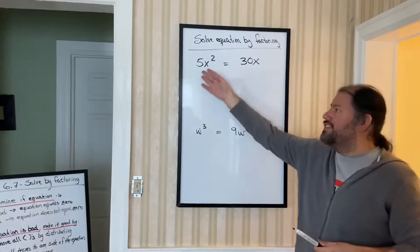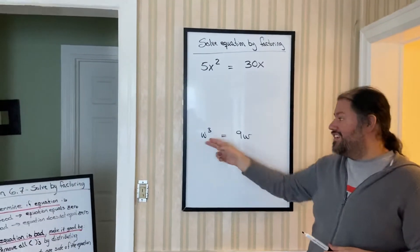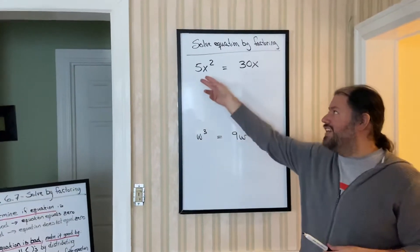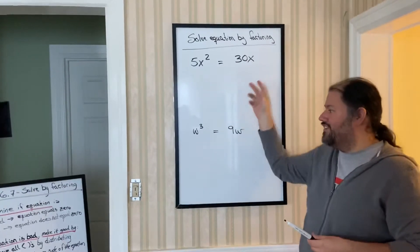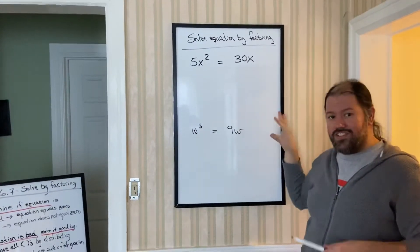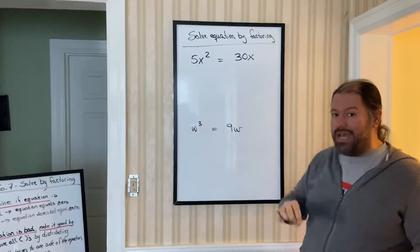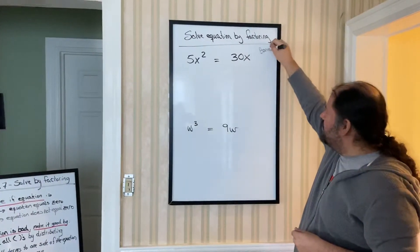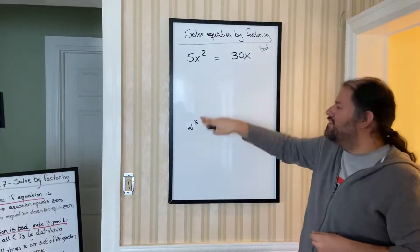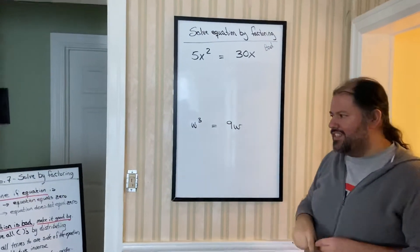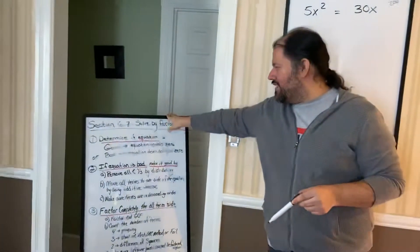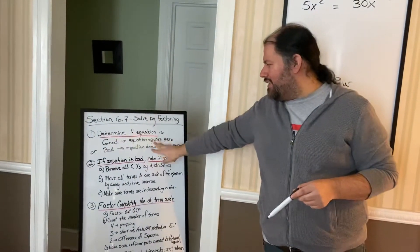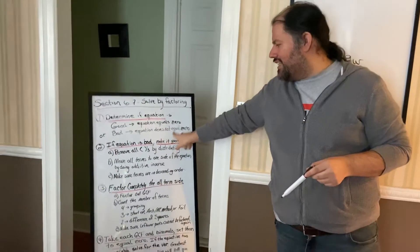Now notice these two equations, there's no zero here. Both sides have some type of number and variable. So these are examples of what we call bad equations. Now why are these bad equations? Because again, I don't see an equal zero on any side. So our first step to solving was always determine good or bad. We know ours is bad because it does not equal zero.